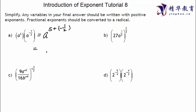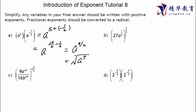So 5 is the same as 10 over 2, minus one half gives us a to the power of 9 over 2. We should convert the fractional exponent into radical form: a to the power of 9, under a square root. Since it's a square root, we don't write the 2. That's done.